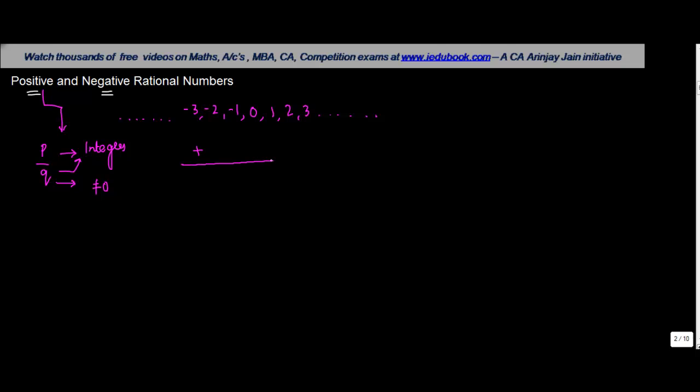So let's say for example, P can be a positive integer or a negative integer, or it can be 0 also. Similarly, even Q can be positive or it can be negative.